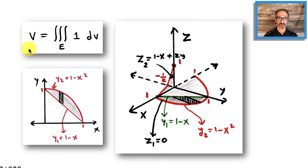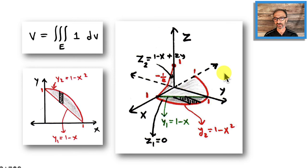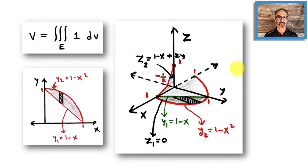Here's a summary: the volume is a triple integral over region E, which is above the bounded region in xy and below the ceiling — the tilted plane z2. z goes from z1 equals 0 up to z2 equals 1 minus x plus 2y. y goes from y1 equals 1 minus x to y2 equals 1 minus x squared. x goes from 0 to 1. The main idea is knowing how to set up the triple integral with the right bounds and right order.